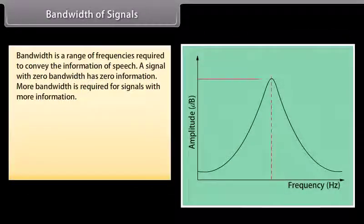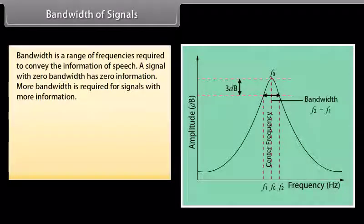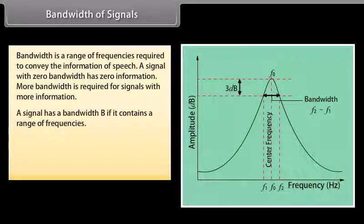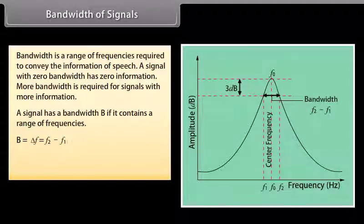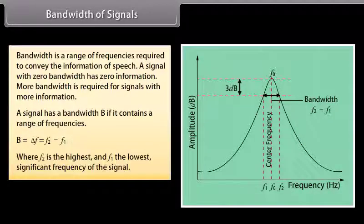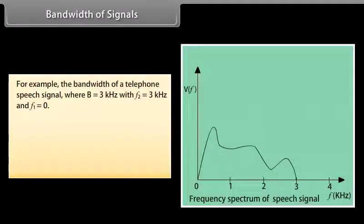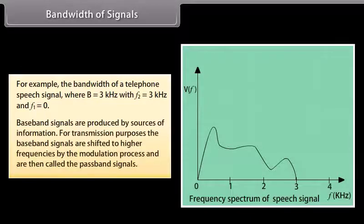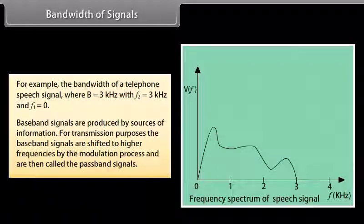Bandwidth is the range of frequencies required to convey the information of speech. A signal with zero bandwidth has zero information. More bandwidth is required for signals with more information. A signal has a bandwidth B if it contains a range of frequencies: B = ΔF = F2 − F1, where F2 is the highest and F1 is the lowest significant frequency of the signal. For example, the bandwidth of a telephone speech signal is B = 3 kilohertz, with F2 = 3 kilohertz and F1 = 0. Baseband signals produced by sources of information are shifted to higher frequencies by the modulation process and are then called passband signals.